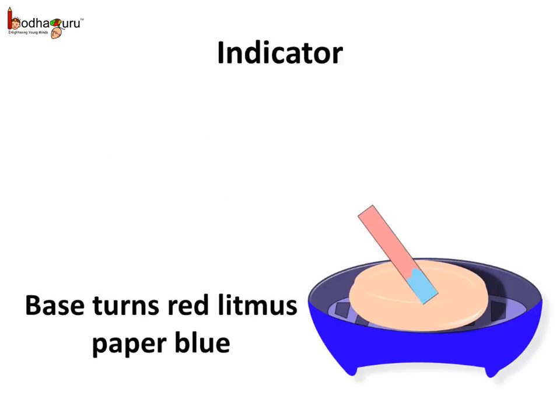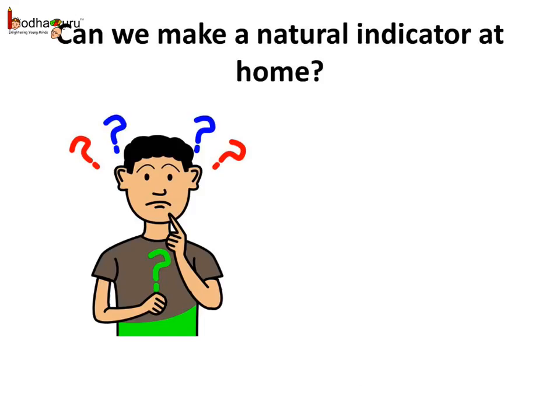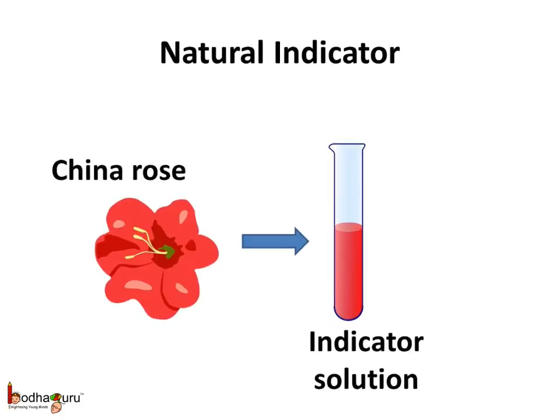When red litmus comes in contact with basic substances like soap, it turns blue. Can we make a natural indicator at home? Yes, we can! Collect some hibiscus flowers, commonly known as china rose or good health petals, and add them to boiling water for some time, then strain out the petals.